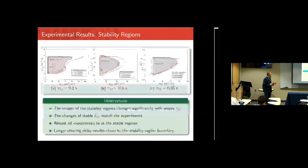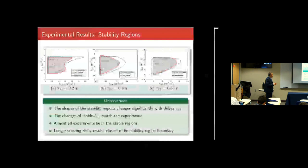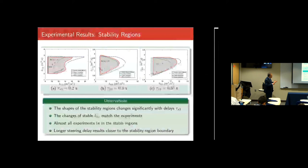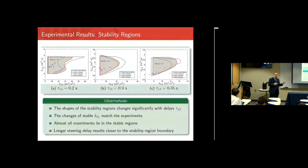Looking at the stability region in steering gain space: because steering is five times more sensitive than upper body movement, increasing the delay shifts the stability region and reduces its area. The experimental parameter dots show that at small delay, most subjects operate within the stability region. As delay increases, some subjects' parameters move outside the stability boundary — shown as red dots indicating instability — and eventually they cannot ride the bicycle at all.